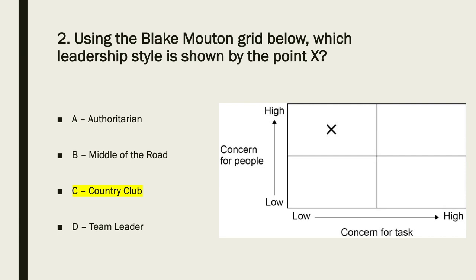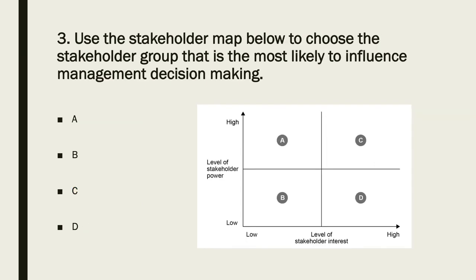On stakeholder mapping: if you are most likely to influence management decision making, that probably indicates you have a high amount of stakeholder power and a high amount of interest, which means that C must be the answer.